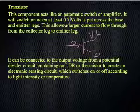It can be connected in parallel to a potential divider circuit so that the base leg runs between the two parallel loops and if those potential dividers contain an LDR or a thermistor we can create an electronic sensing circuit, which will switch on or off according to either light intensity or temperature.